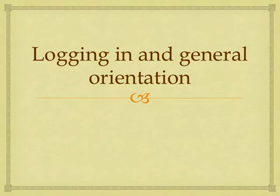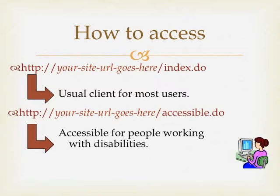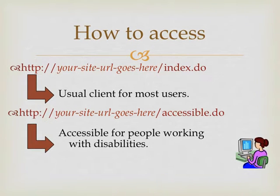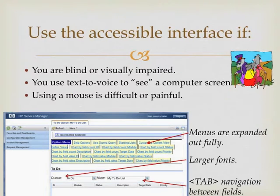Logging in and general orientation. To access Service Manager you will go to a URL in your web browser. This will end in something like index.do — this is the usual client for most users. There will also be another interface which ends in accessible.do, which is designed to be used by people with disabilities. You can use the accessible interface if you're blind or visually impaired because it is deliberately developed so that it is readable by the JAWS screen reader.